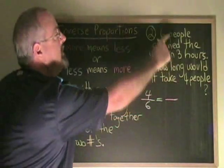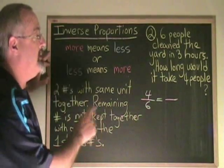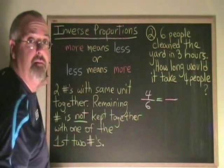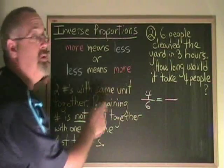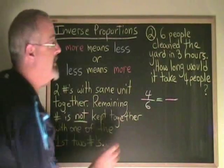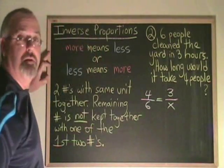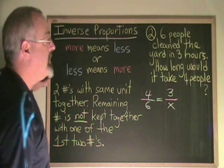Then, the three hours goes with the six people. So if it was a direct proportion, the three and the six would go together on the bottom. But because this is less-means-more, it's an inverse proportion. So I deliberately do not put the three and the six together. The three ends up on the top here, and the x goes in the last remaining spot.